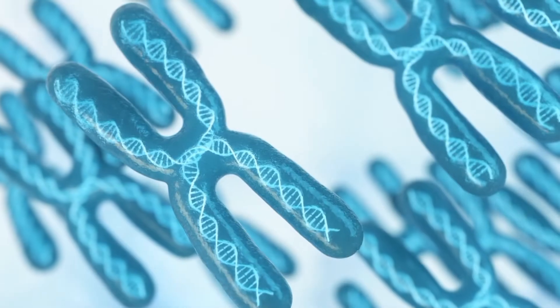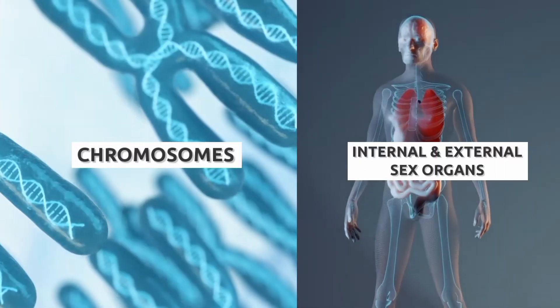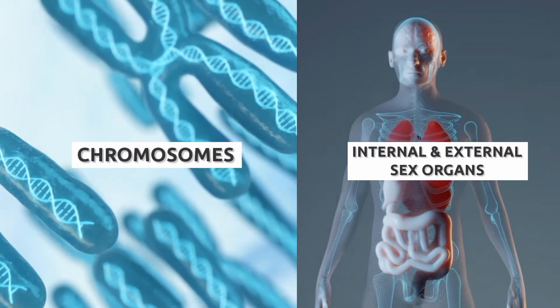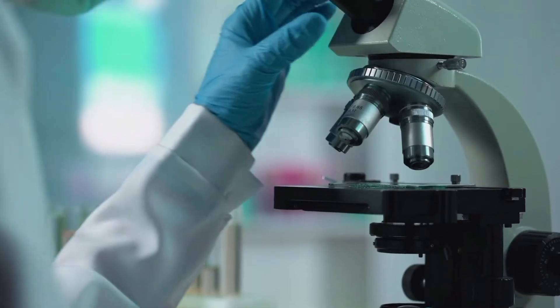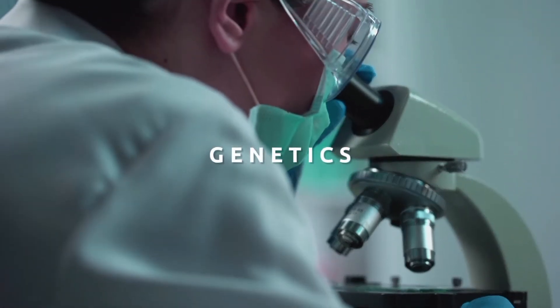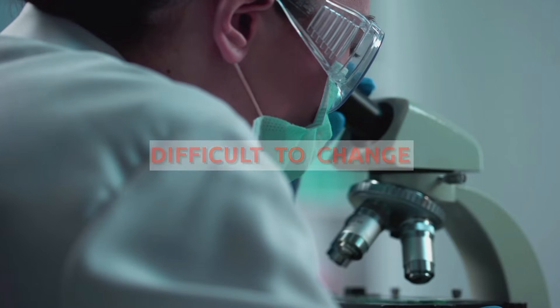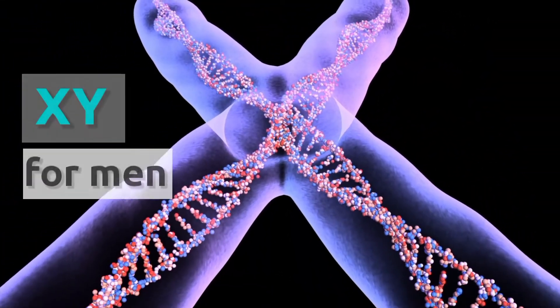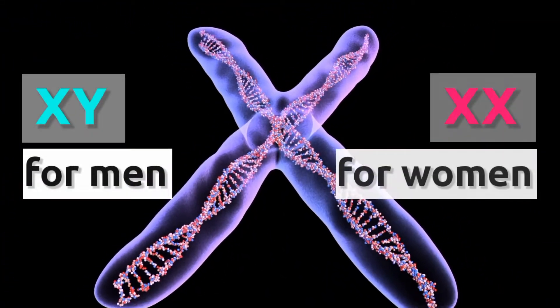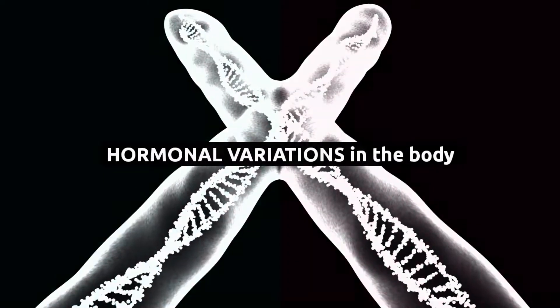The term sex refers to biological characteristics, namely chromosomes, internal and external sex organs, and the hormonal activities within the body. The scientific designation of sex is therefore based on genetics and is difficult to change. The variation in sex chromosomes — XY for men, XX for women — determines a person's sex, as well as the hormonal variations in their body.